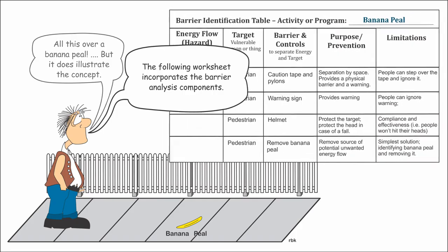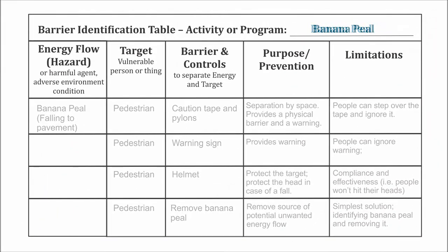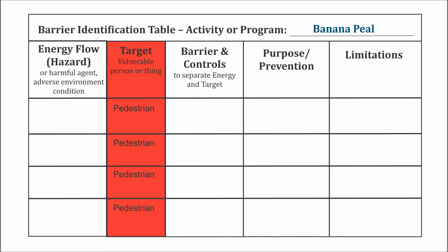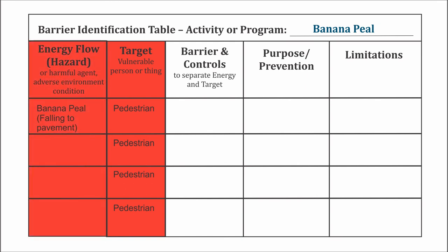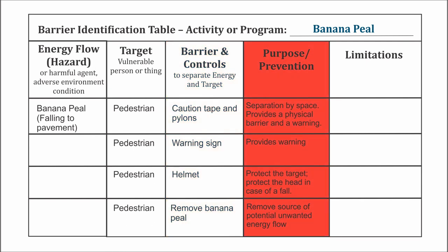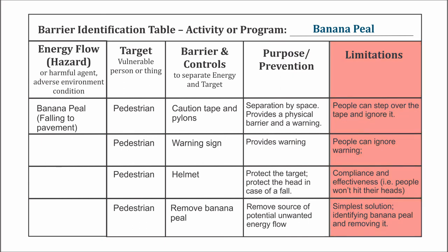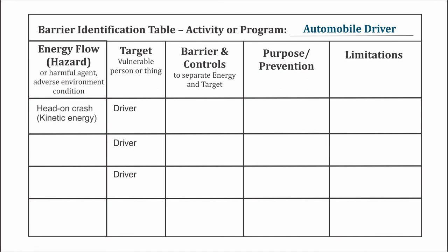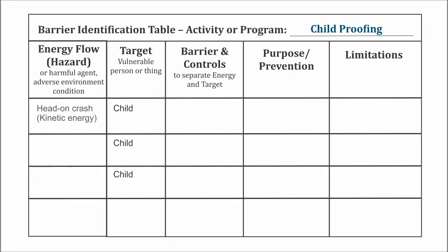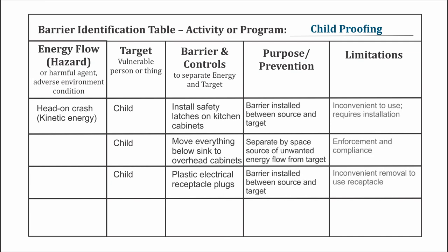A worksheet is presented that incorporates the barrier analysis model components and steps. A quick examination of the worksheet reveals the basic components of barrier analysis. Using the banana peel as an example, start with identifying the target in column 2, or with identifying the source of the potential unwanted energy transfer in column 1 — either way works. The third column identifies the potential barriers and controls that can be implemented. The last two columns identify the purpose of the barrier and its practicability or limitations. For illustrative purposes, the automobile and childproofing worksheets are also provided, utilizing the examples used in this video. Viewers can stop the video and examine these tables in greater detail if desired.